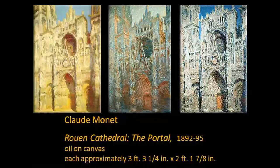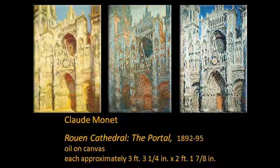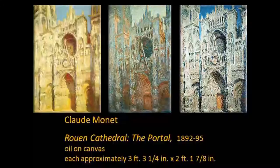He did this in order to capture the essence of this particular architecture — not the static state, but the changing state. What he shows in the several studies of this same architecture is how the appearance, the look, the impression of a solid architecture like this one keeps on changing as the direction of the light changes, as the quality of the light changes, as the colour of the light changes — the objects, and in this case the architecture, also change.